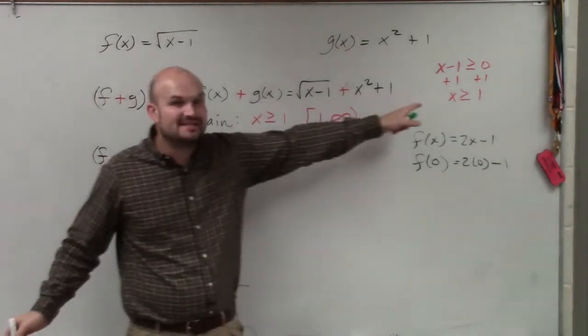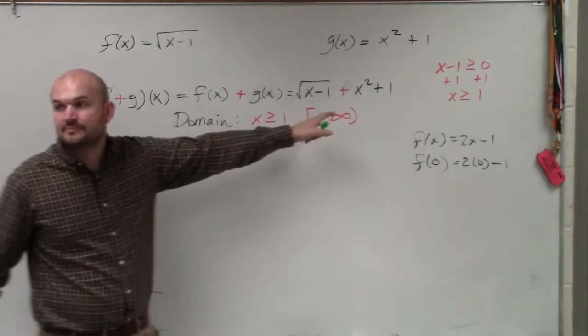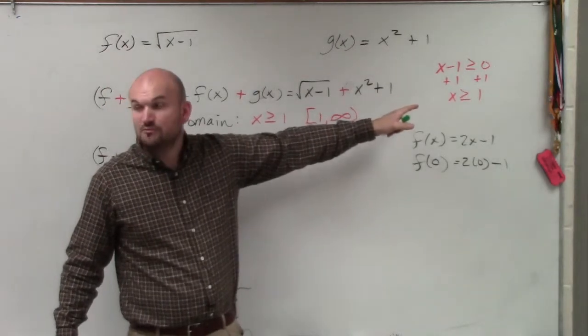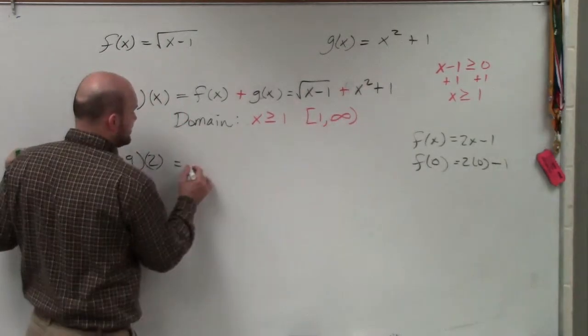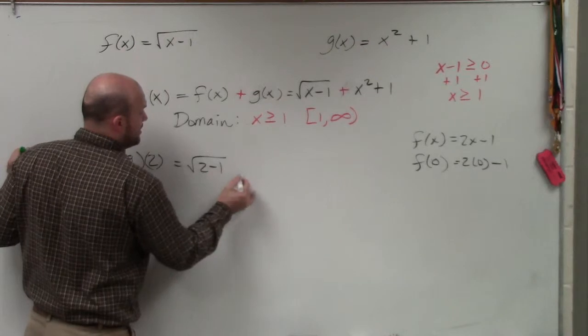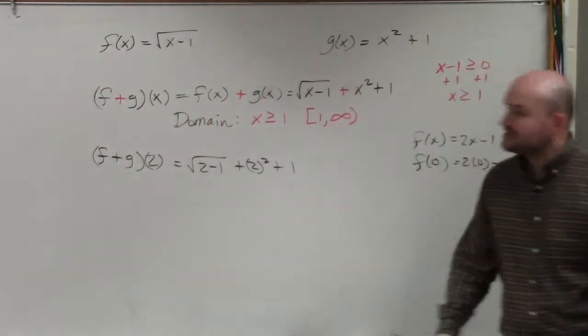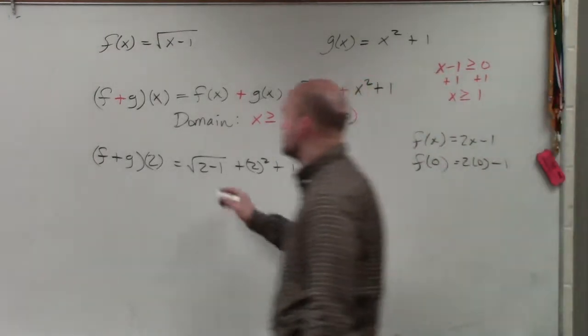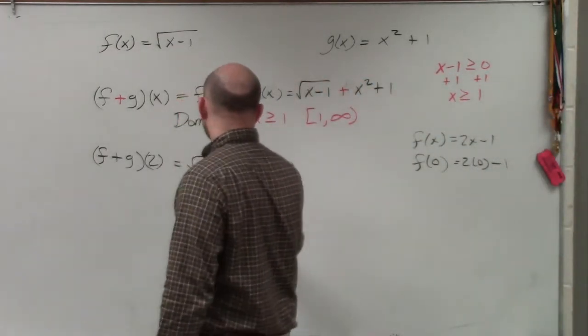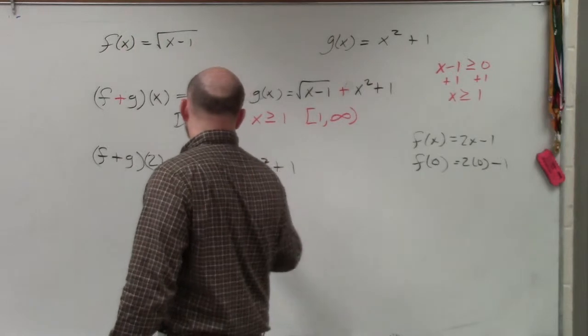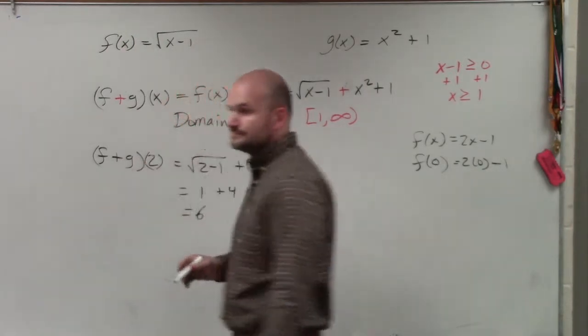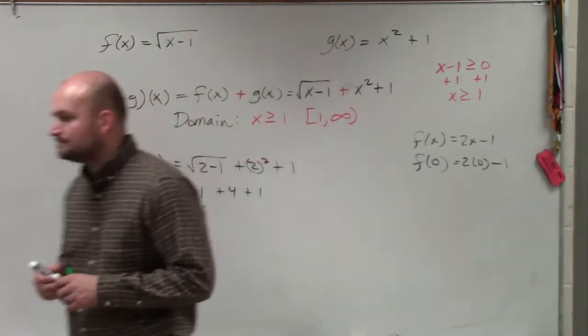So I already have the addition of them. So now, you're just going to do square root of 2 minus 1 plus 2 squared plus 1. Well, 2 minus 1 is 1. Square root of 1 is 1. 2 squared is 4. Plus 1. 6. That's it. Done. OK?